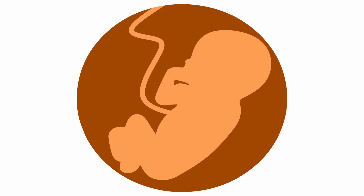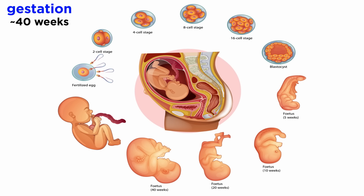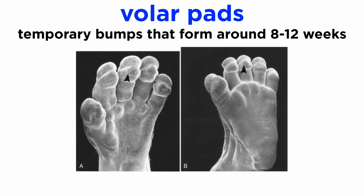In order to understand the formation of friction ridge patterns in detail, we'll have to discuss some embryological concepts. The average length of pregnancy, or gestation, is 40 weeks, so an unborn baby spends about 40 weeks in the mother's womb. The hands and feet of the fetus become recognizable by 6 to 13 weeks. Before this period, they just look like flat paddles. Eventually, somewhere around 8 to 12 weeks, some temporary bumps form on the fingers, palms, and feet of the fetus. These bumps are known as volar pads.